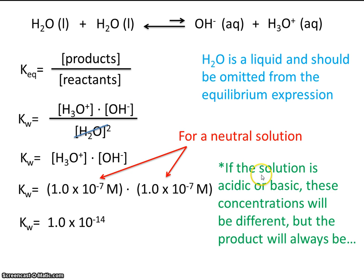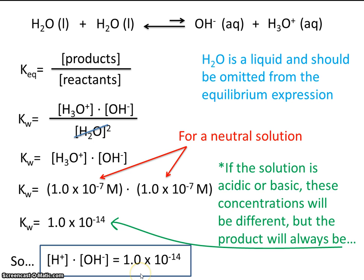Now, if the solution we're looking at is acidic or basic, these two concentrations here will be different. But the product, or the number that you get when you multiply the two together, that will always be this value right here. That's an important thing to keep in mind. So if we multiply the concentration of acid times the concentration of base, we always get 1 times 10 to the -14.